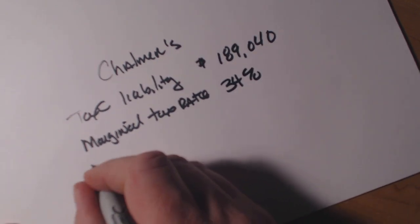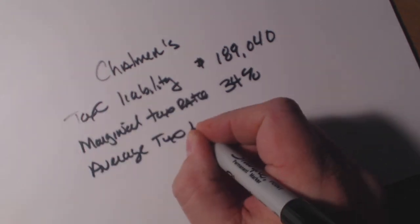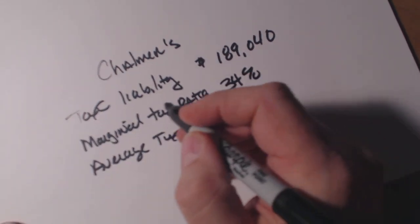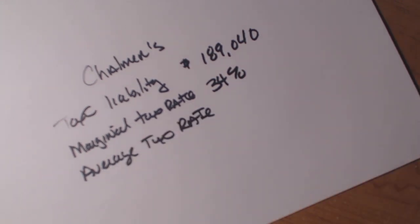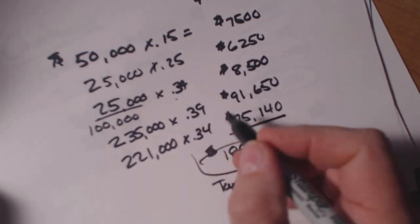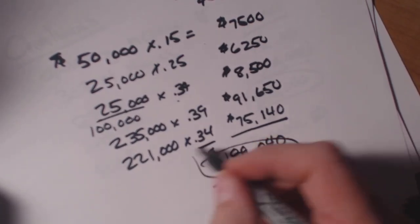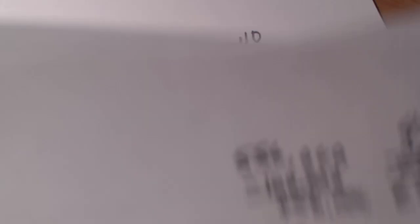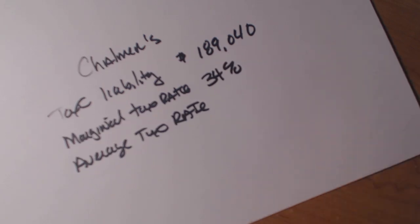So now we're looking at the average tax rate as well. Let me just go back over this. We have a tax liability of $189,000. Our marginal tax rate is 34%, that's the category where the next dollar earned will be taxed. Now we want to look at what our average tax rate is.